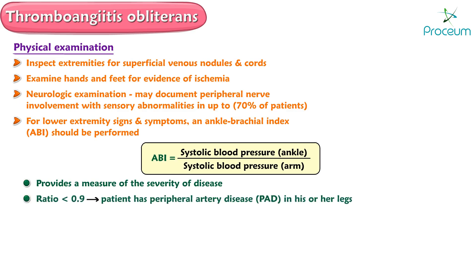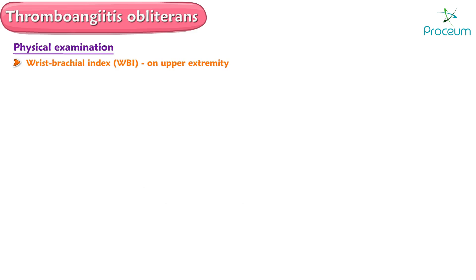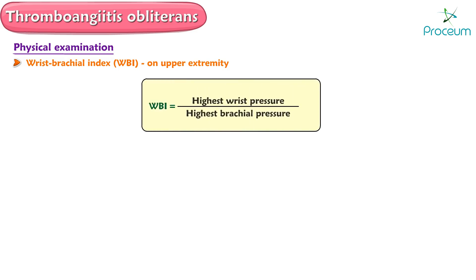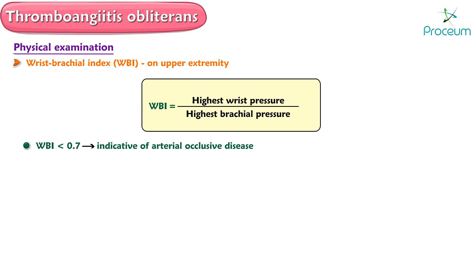If the ankle brachial index ratio is less than 0.9, it may indicate peripheral artery disease in the blood vessels of the legs. Similarly, a wrist brachial index can be performed in the upper extremity, calculated by dividing the highest wrist pressure from each limb by the highest brachial pressure. A wrist brachial index of less than 0.7 is indicative of arterial occlusive disease.